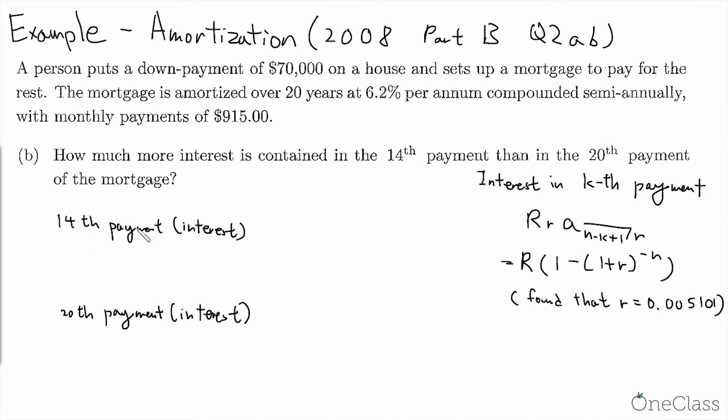So we'll begin. Here is the 14th payment with just interest only, and the 20th payment with just interest. So we're talking about only the interest portion. So here R will have 915 and then [1 - (1 + 0.005101)^-N]. So what will be N? N is not just simply 14 because as we've seen in this equation it's n minus k plus 1. So in this case it would be, since we know there are total payments of 240, minus 14 plus 1, so that will give us 227.